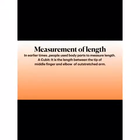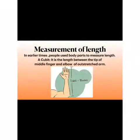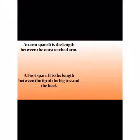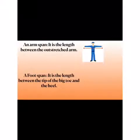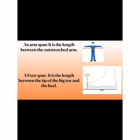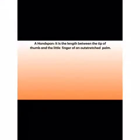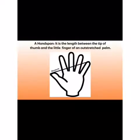Now, measurement of length. In earlier times people used to measure length by cubit, arm span, and other body-based units. The cubit is the length from the tip of the middle finger to the elbow of the outstretched arm — one cubit equals 18 inches. The arm span is the length of the outstretched arms. A footstep is the length from the tip of the big toe to the heel. The hand span is the length between the tip of the thumb and the little finger of an outstretched hand.